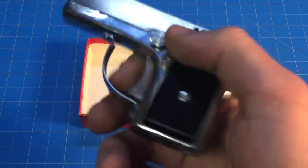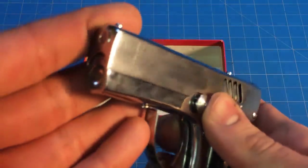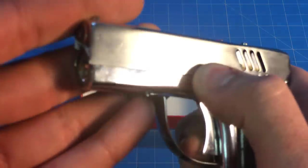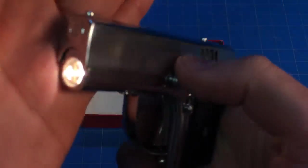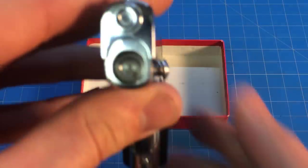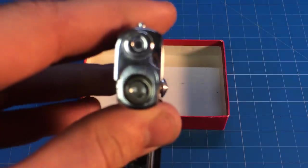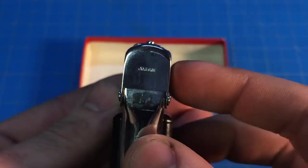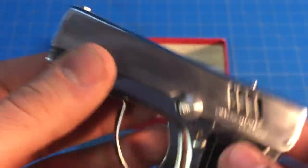This could be mistaken for a mag release, which is actually the switch for the flashlight. On the front you can see the mock barrel and the iron sights.